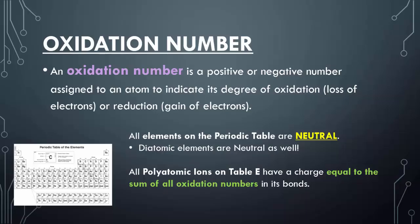And if you forgot what diatomics are, think of the phrase Hoffbrinkle, or Brinklehoff. All polyatomic ions, however, are a group of atoms that collectively have a charge, which is the sum of all the oxidation numbers put together. Those are the ones you can find on table E.